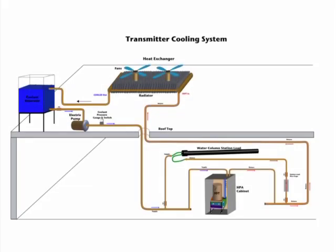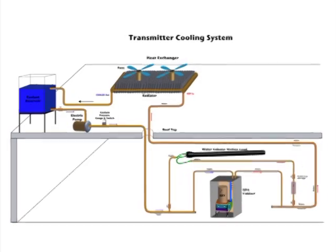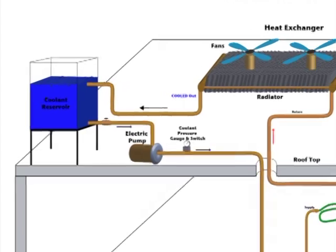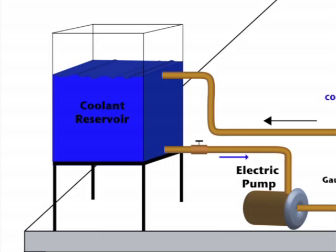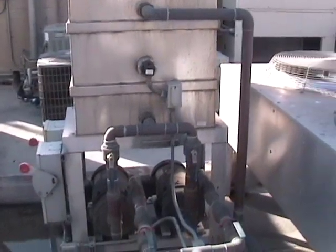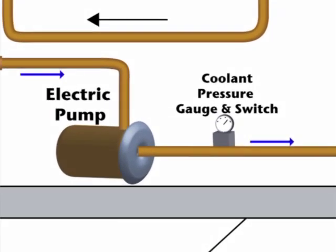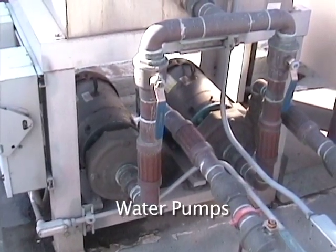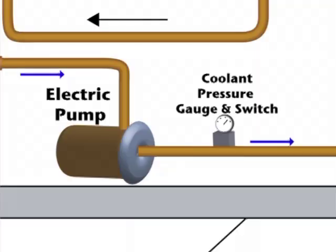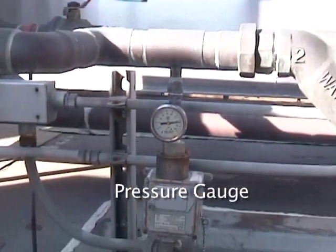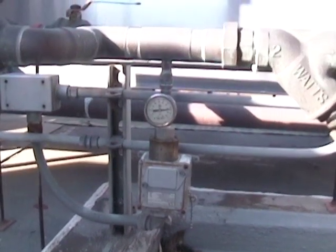The cooling system is a very important part of the transmitter. It removes the heat generated by the high voltages and output powers of the IoT itself. It starts at the reservoir, where the coolant is stored before it is pumped out. A pipe connects the reservoir to an electric pump that pushes the coolant through the entire system. Here you can see an actual reservoir connected to the two pumps below — one is always on standby. The two water pumps are used alternately to ensure that one is always working. After this is a pressure gauge and pressure switch, which informs the transmitter if the coolant stops and will turn off the transmitter if need be.